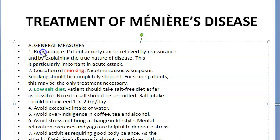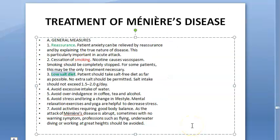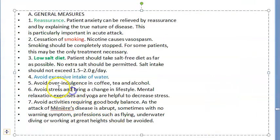Starting with general measures: reassure the patient, as they'll have anxiety about when the next attack will occur. Tell them not to smoke, and to take a low salt diet, because sodium irritates the hair cells in the inner ear. Don't take excessive water — water retention leads to more endolymph. Avoid coffee, tea, and alcohol altogether.